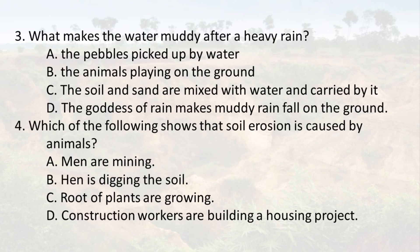3. What makes the water muddy after a heavy rain? A. The pebbles picked up by water. B. The animals playing on the ground. C. The soil and sand are mixed with water and carried by it. D. The goddess of rain makes muddy rain fall on the ground.